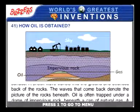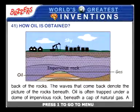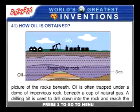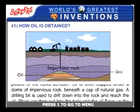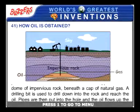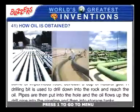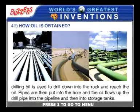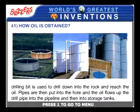Oil is often trapped under a dome of impervious rock beneath a cap of natural gas. A drilling bit is used to drill down into the rock and reach the oil. Pipes are then put into the hole and the oil flows up the drill pipe into the pipeline and then into storage tanks.